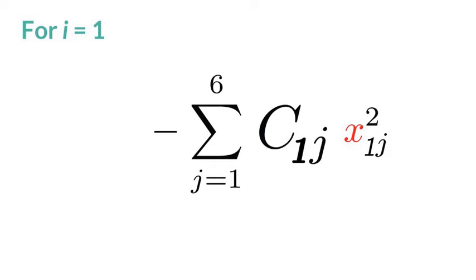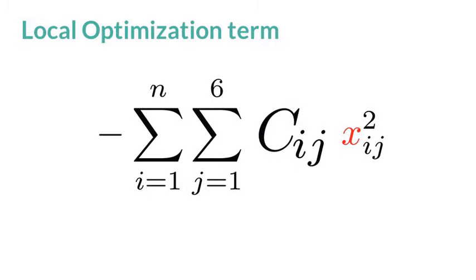If this is written in compressed form for intersection i equals 1, we have this. Generally, there is also going to be a sum over all intersections i. We call this whole term the local optimization term.